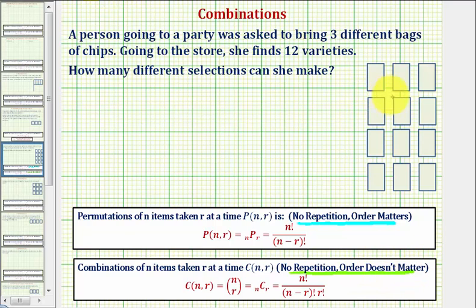So say we have one bag of each variety shown here. If we select three different bags, let's say these first three bags, the question is, if we change the order of these three bags, does it change the selection? And the answer is no. So if we change the order here, it's still the same three types of chips. Which means, to find how many different selections that she can make, we use a combination.